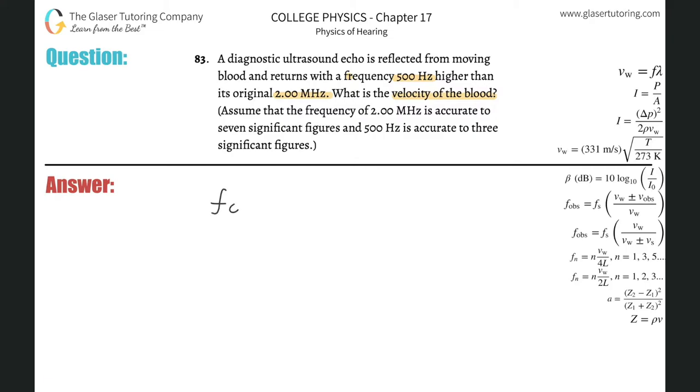I can use this equation: the frequency of the observer, the ultrasound machine, equals the frequency of the source multiplied by the velocity of the sound wave through the medium plus or minus the velocity of the blood, divided by the velocity of sound through the medium plus or minus the velocity of the blood.